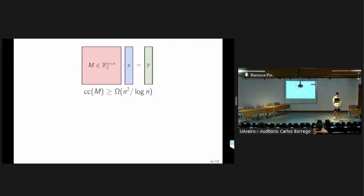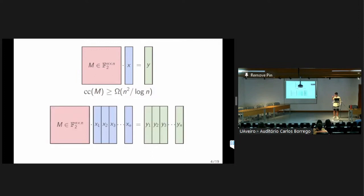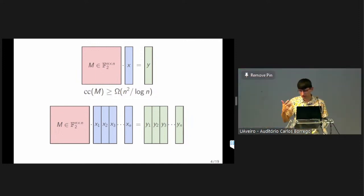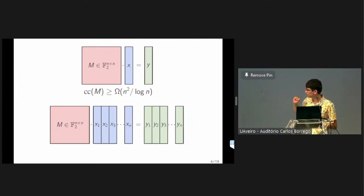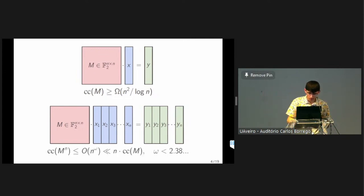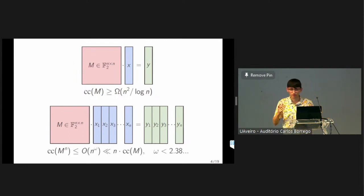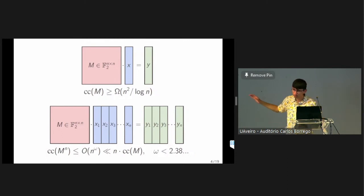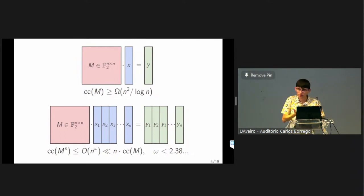Nevertheless, it's also not too hard to show that if you repeat the same function many times — so now we don't have just one vector, we have n different vectors — then this iterated matrix-vector multiplication is essentially just a matrix-matrix multiplication. So we can use fast matrix multiplication algorithms to compute this in better than brute force time. Naively you would need time scaling as n cubed, but if you use an algorithm running in time n to the omega, where currently the best bound on the matrix multiplication exponent is omega at most 2.38 or so, you get a bound substantially less than the naive bound of just repeating the same algorithm n times.